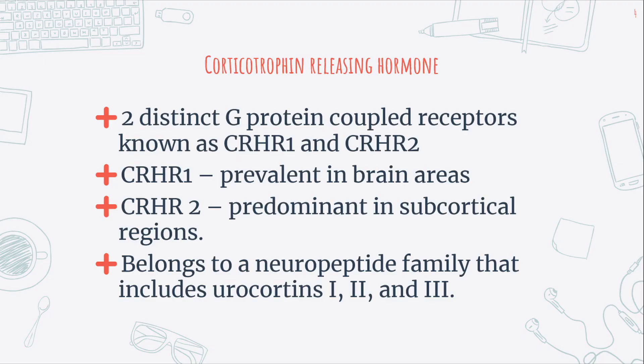Corticotropin-releasing hormone acts via two distinct G-protein-coupled receptors: corticotropin-releasing hormone receptor 1 and corticotropin-releasing hormone receptor 2. Corticotropin-releasing hormone receptor 1 expression is prevalent in brain areas responsible for sensory and motor control, such as the cortical mantle, olfactory bulb, hippocampus, amygdala, basal ganglia, medial and lateral hypothalamic nuclei, and cerebellum.